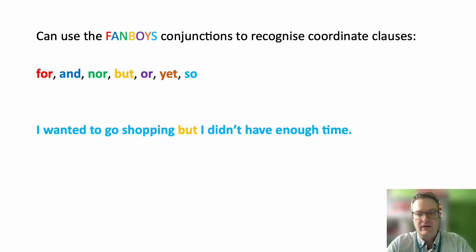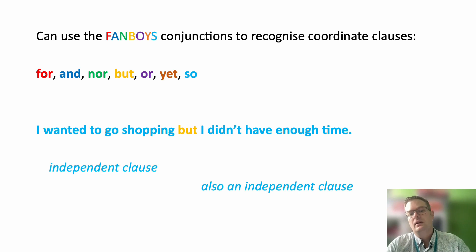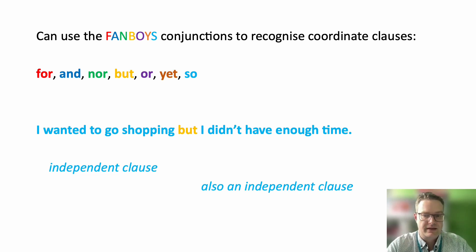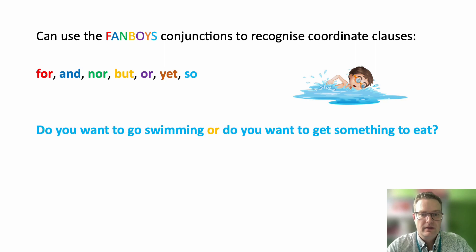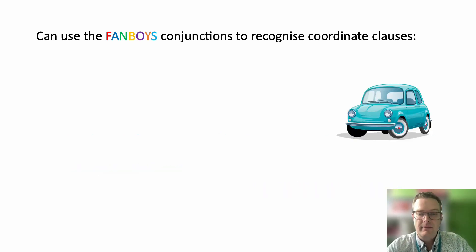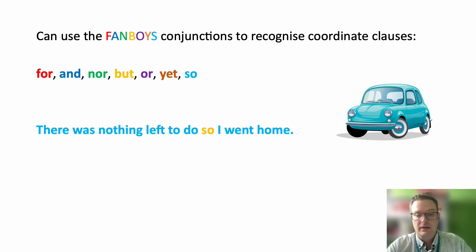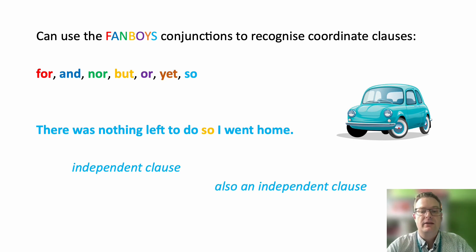You might have an example like: I wanted to go shopping, but I didn't have enough time. Both of those are completely fine on their own — I wanted to go shopping, full stop; I didn't have enough time, full stop. You've connected them with but to make a bigger sentence, but it's two clauses because you've got a subject and a verb in both of them. Here's another example: Do you want to go swimming, or do you want to get something to eat? Again, both of those are fine on their own — independent clause, another independent clause. Together, that makes another compound sentence. Or what about: There was nothing left to do, so I went home. I went home is fine as a sentence on its own. There was nothing left to do — also fine on its own. So again, independent clause, another independent clause — put them together, you get a compound sentence.